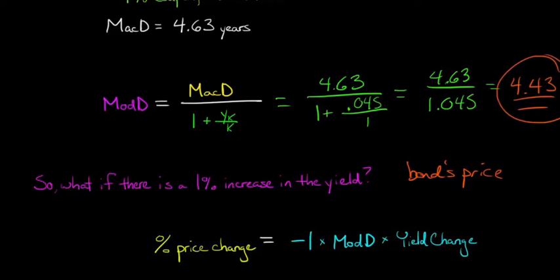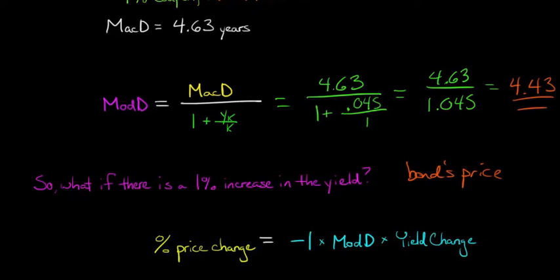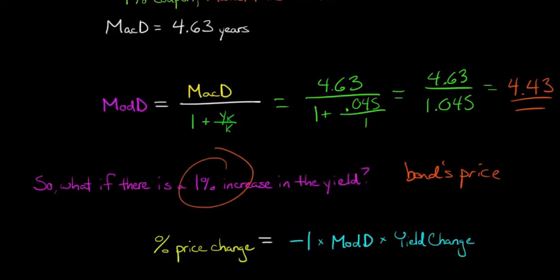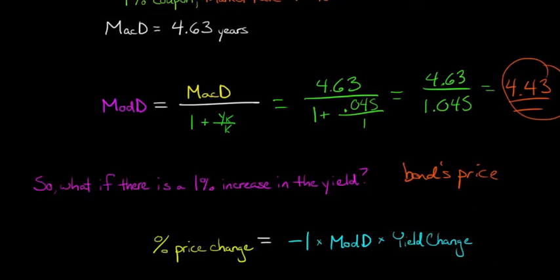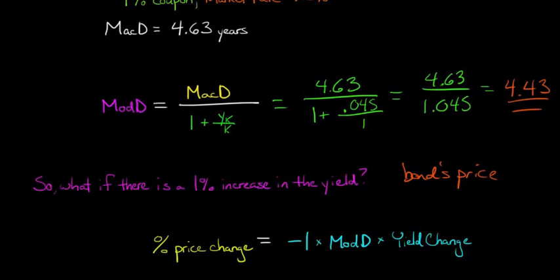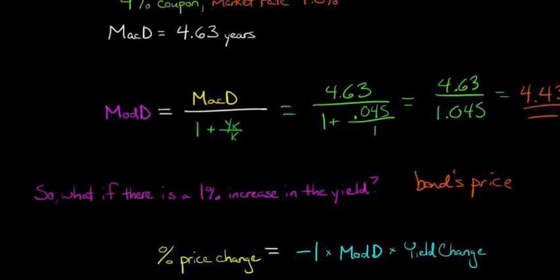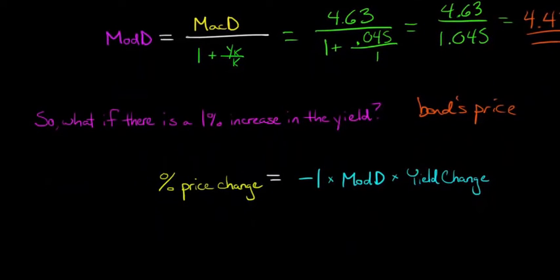The percentage price change in the bond is going to be equal to negative 1 times the modified duration, which we just computed, times the yield change, which we're given. So basically, the yield change is 1% or 0.01, and you've already computed the modified duration, and now you can say what's going to happen to the price of the bond.